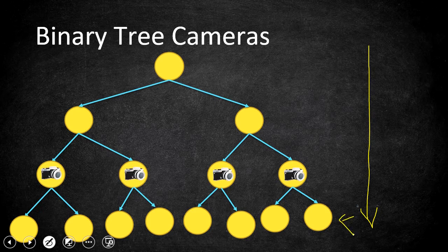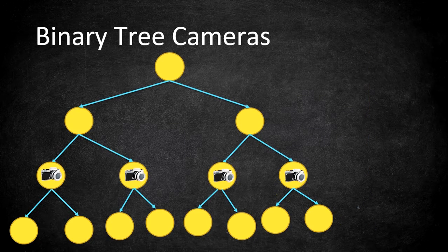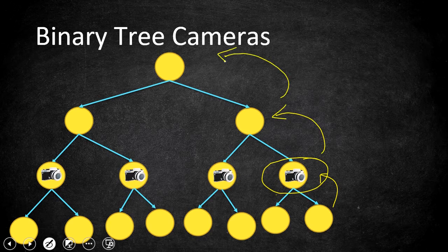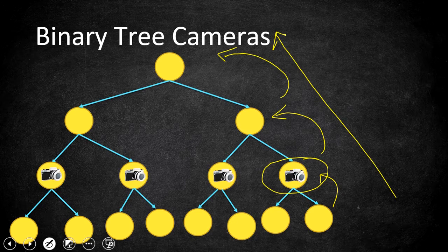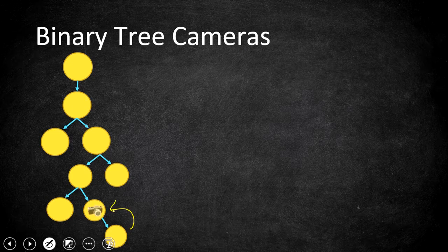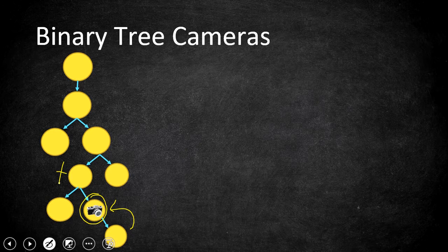So the first step is: we always keep a camera at the parent of a leaf node. Based on where we place that camera, we fill cameras upward — this is a bottom-up approach, starting from the leaf node and completing the camera placement toward the top of the binary tree. In this example, the leaf node's parent gets a camera. Based on that camera, we check which nodes still need coverage. If a camera is placed at a node, its parent is already covered, so we go one step further and place cameras only as needed.